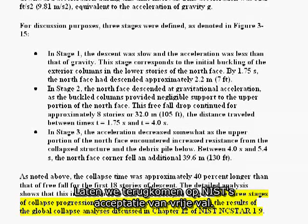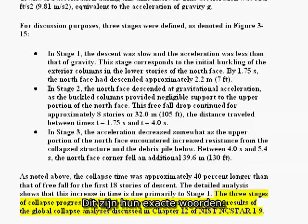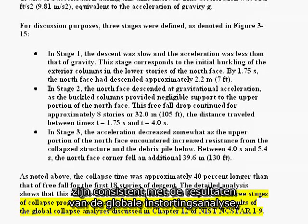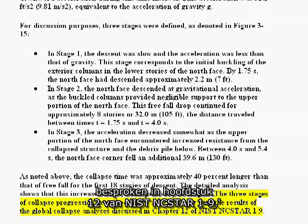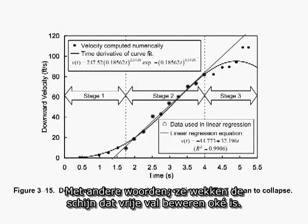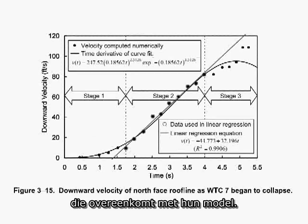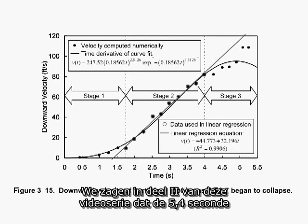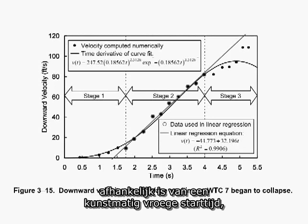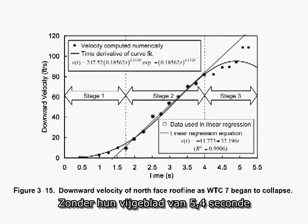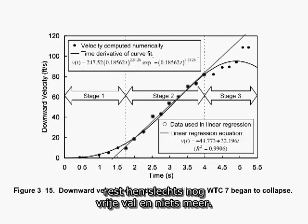Let's come back to NIST's acceptance of freefall. Here is their exact wording: "The three stages of collapse progression described above are consistent with the results of the global collapse analysis discussed in Chapter 12 of NIST NCSTAR 1-9." In other words, they're giving the appearance of claiming freefall is okay, but actually it's the 5.4-second duration of their three-stage analysis that matches their model. But the 5.4 seconds depends on an artificially early start time which has no valid observational basis. Without the 5.4-second fig leaf, they are left with freefall and nothing more.